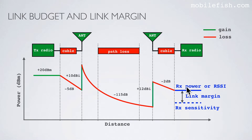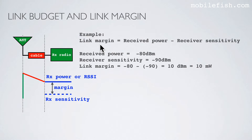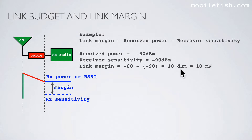The difference between the received power and the receiver sensitivity is called the link margin. The link margin is the received power minus the receiver sensitivity. If the received power is minus 80 dBm and the receiver sensitivity is minus 90 dBm, the link margin is 10 dBm, which is the same as 10 milliwatts.